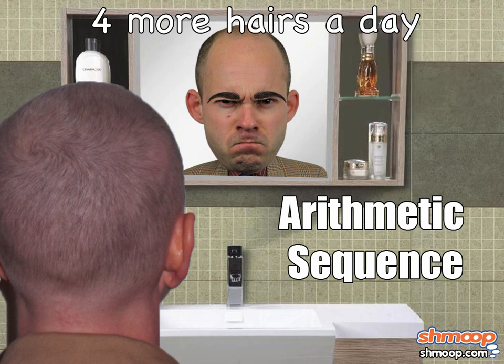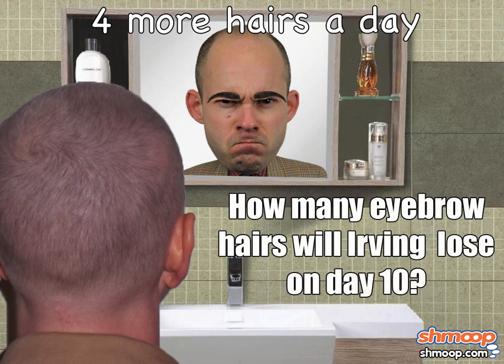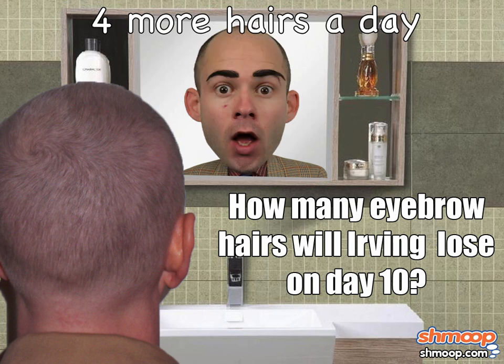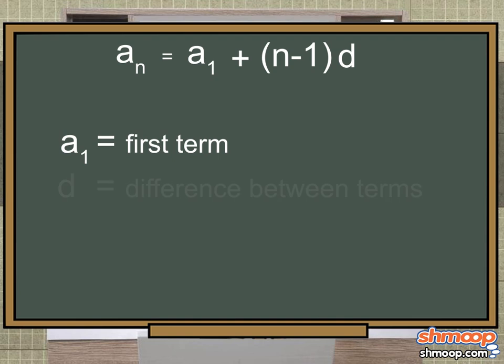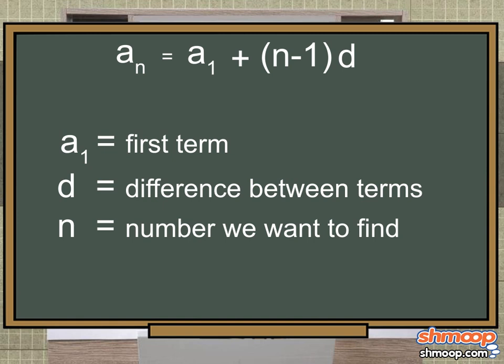In other words, you can always add the same thing to get from one term to the next. So how many eyebrow hairs will Irving lose on day ten? And will he still be able to make his surprised face? To find the tenth term in the sequence, we can use the formula: a sub n equals a sub 1 plus n minus 1 times d, where a sub 1 is the first term of the sequence, d is the difference between any two terms, and n is the number of the term we want to find.